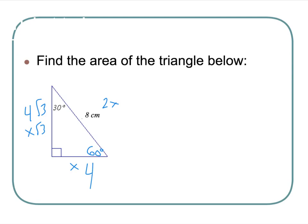The 4 and the 4 root 3, those guys are perpendicular to each other - that's a base and a height. Area equals one half base times height, so one half times 4 times 4 root 3 is 8 root 3 centimeters squared. Done.